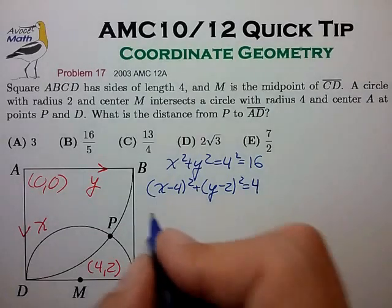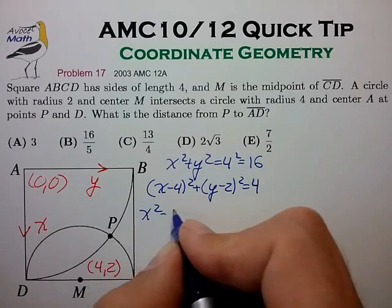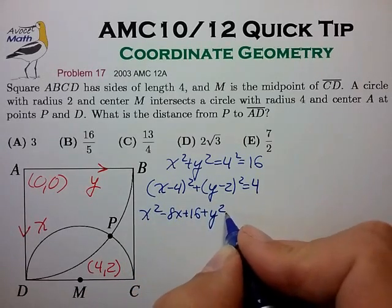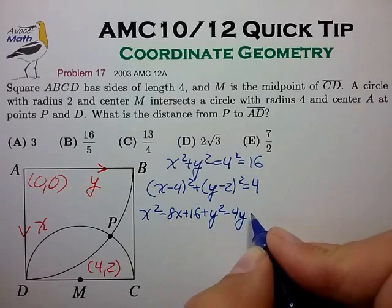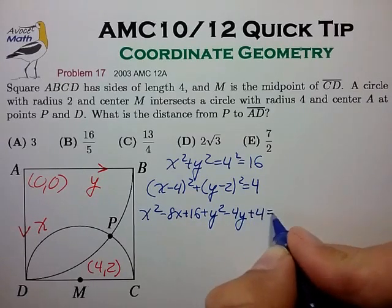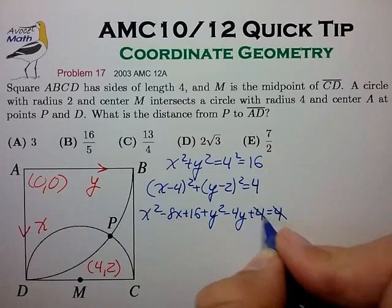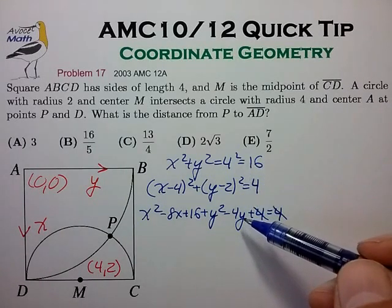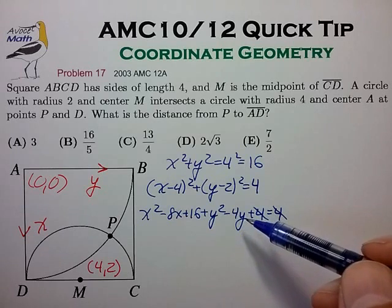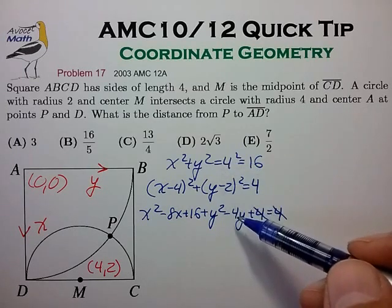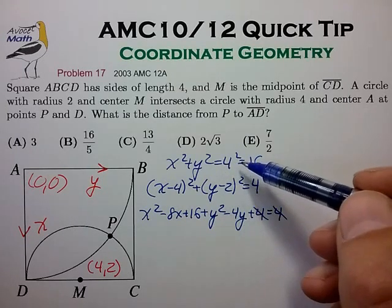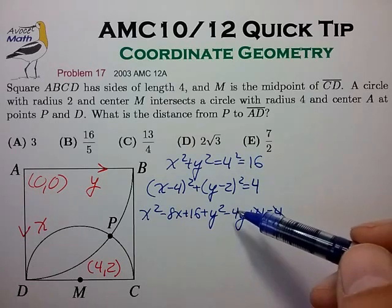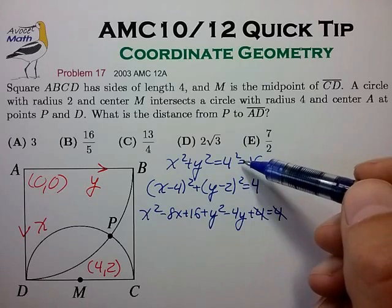So let's expand this. X squared minus 8X plus 16 plus Y squared minus 4Y plus 4 is equal to 4. The 4's drop out. Now we have two equations here in X and Y, and one good approach is to try to eliminate the squares if at all possible. And here it is possible to eliminate the X squared and the Y squared terms by subtracting the third equation from the first equation.